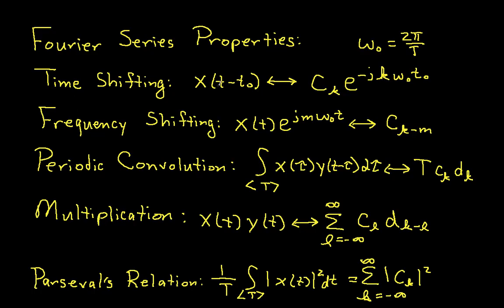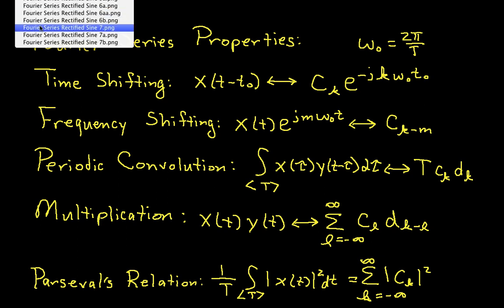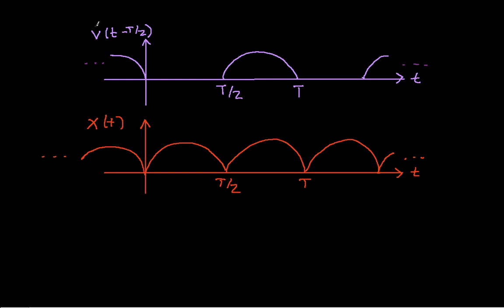If I have x of t minus t0, I basically multiply my Fourier series coefficient by e to the minus j k omega 0 t0. So going back to this, these are the Fourier series coefficients of v, which are my d sub k's.